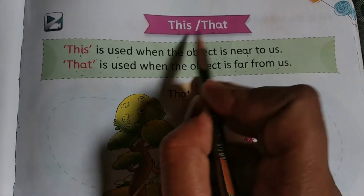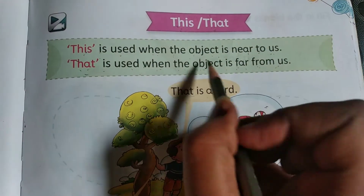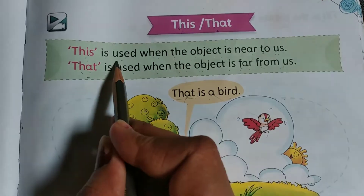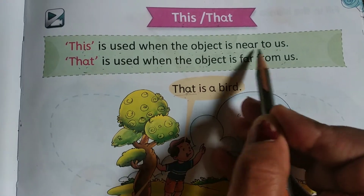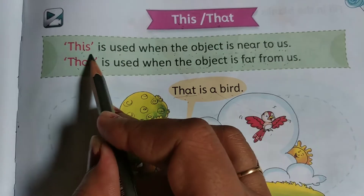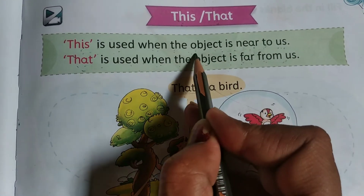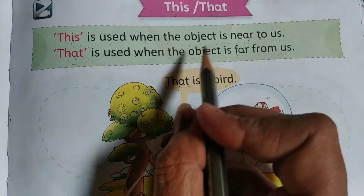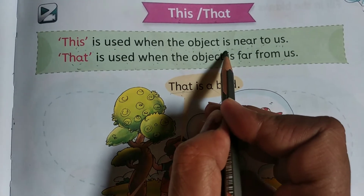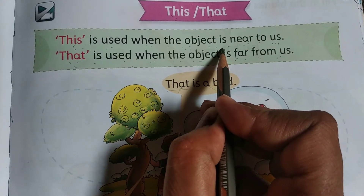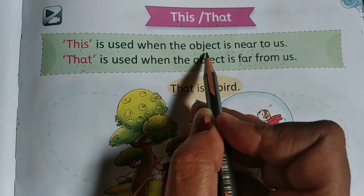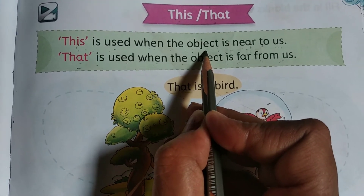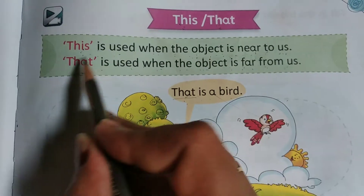This or that ka use — we will learn in this class. 'This' is used when the object is near to us. This ka use hota hai jab koi object, koi thing, koi place, koi person or animal — we use 'this' to talk about one person, place, animal or thing that is near us.